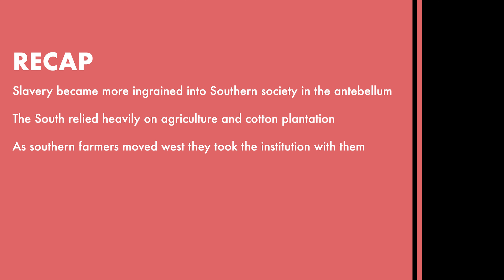For the recap: slavery became more ingrained into Southern society in the antebellum period. More and more Southern people came to believe that it was part of the way of life, and that if slavery were taken away, it was an attack on Southern society as a whole. The South relied heavily on agriculture and cotton plantations. And finally, as Southern farms moved west, they took their enslaved people with them, expanding the institution of slavery.